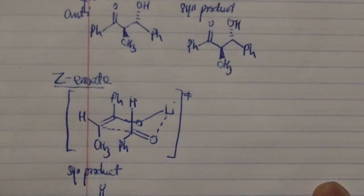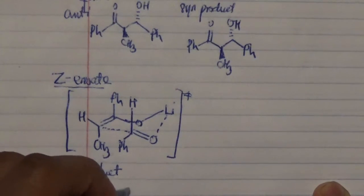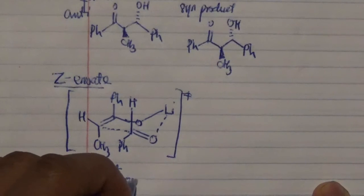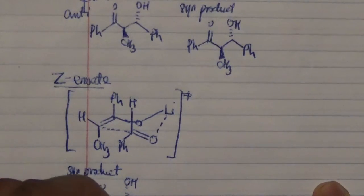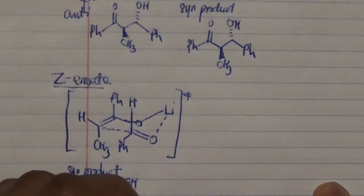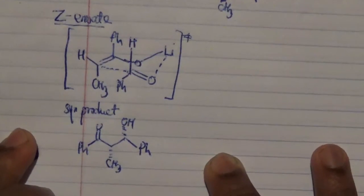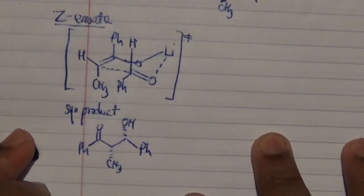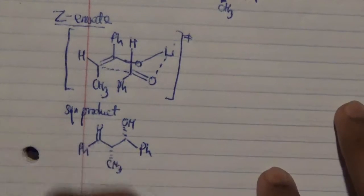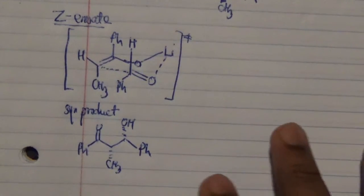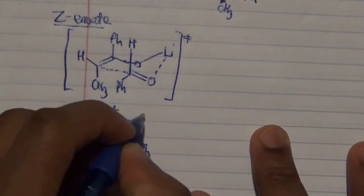This leads to our favored product, which is the syn (cis) product. In this product, the CH3 is pointing away from us, the OH is also pointing away, and the phenyl is on the plane — that is our syn product.